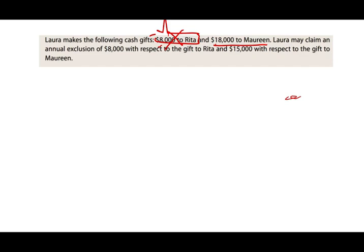Laura may claim an annual exclusion of $8,000 with respect to Rita and $15,000 with respect to Maureen. That additional $3,000 remainder — she's going to have to keep track of it until her total gifts over her lifetime exceed a certain amount. That amount is $11 million plus.